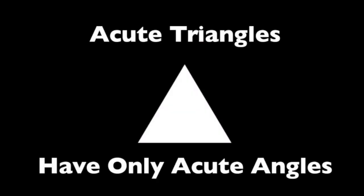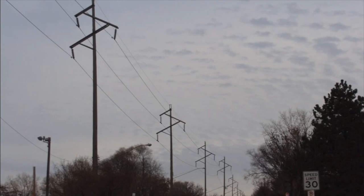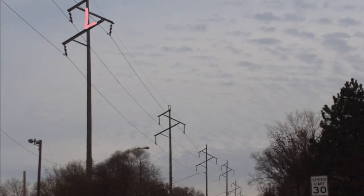Acute triangles have only acute angles. It doesn't matter if a triangle has two acute angles — it has to have all acute angles to be an acute triangle. These power poles have some examples of acute triangles; all the angles are acute, with no obtuse or right angles on them.